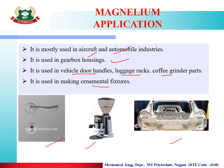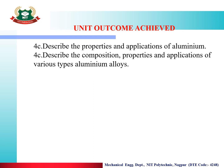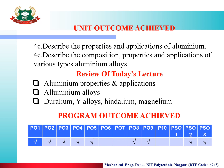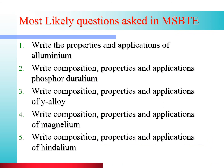The learning outcomes achieved in this lecture: describe the properties and applications of aluminium; describe the composition, properties and applications of various types of aluminium alloys. In this lecture we covered: what aluminium is and its applications; and the aluminium alloys — Duralumin, Y-Alloy, Hindalium and Magnelium. These are the most commonly asked MSBT exam questions — 2 or 3 questions per exam. Remember the properties, applications and compositions carefully.